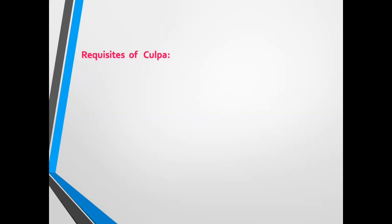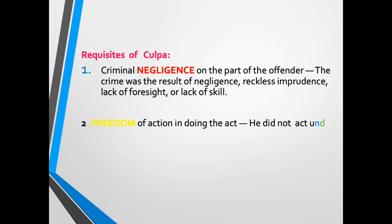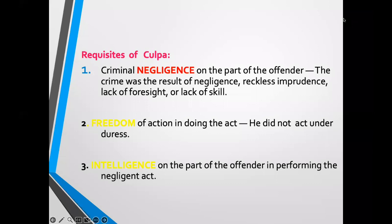Now let's go to the requisites of culpa. First, criminal negligence on the part of the offender — the crime was the result of negligence, reckless imprudence, lack of foresight, or lack of skill. Second, freedom of action in doing the act — the offender did not act under duress. Third, intelligence on the part of the offender in performing the negligent act. The only difference from the requisites of dolo is that the first element is negligence instead of intent.